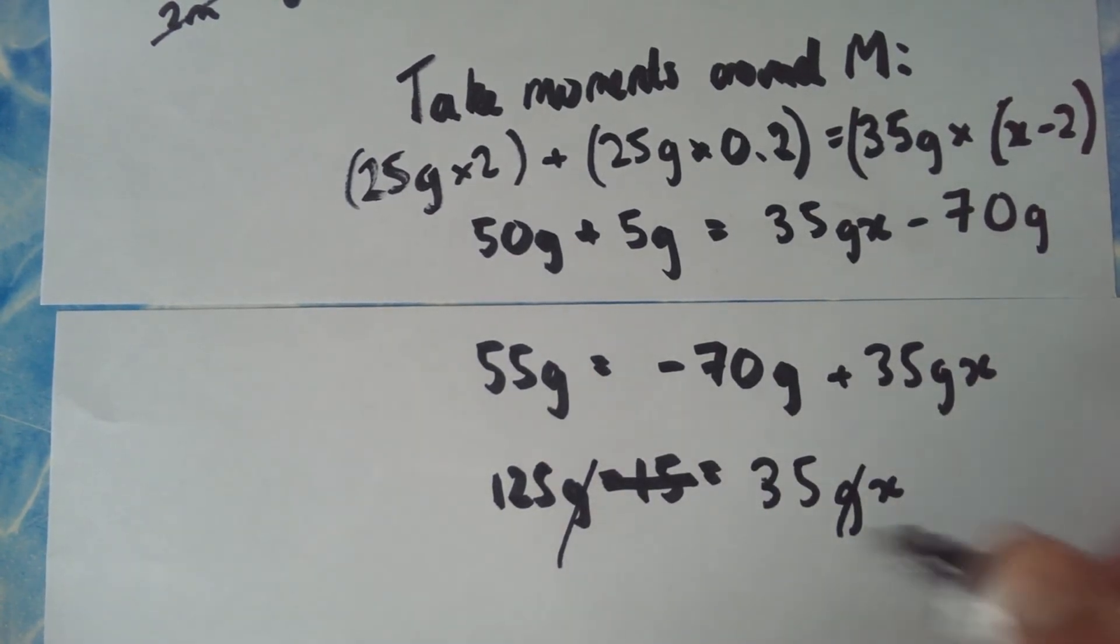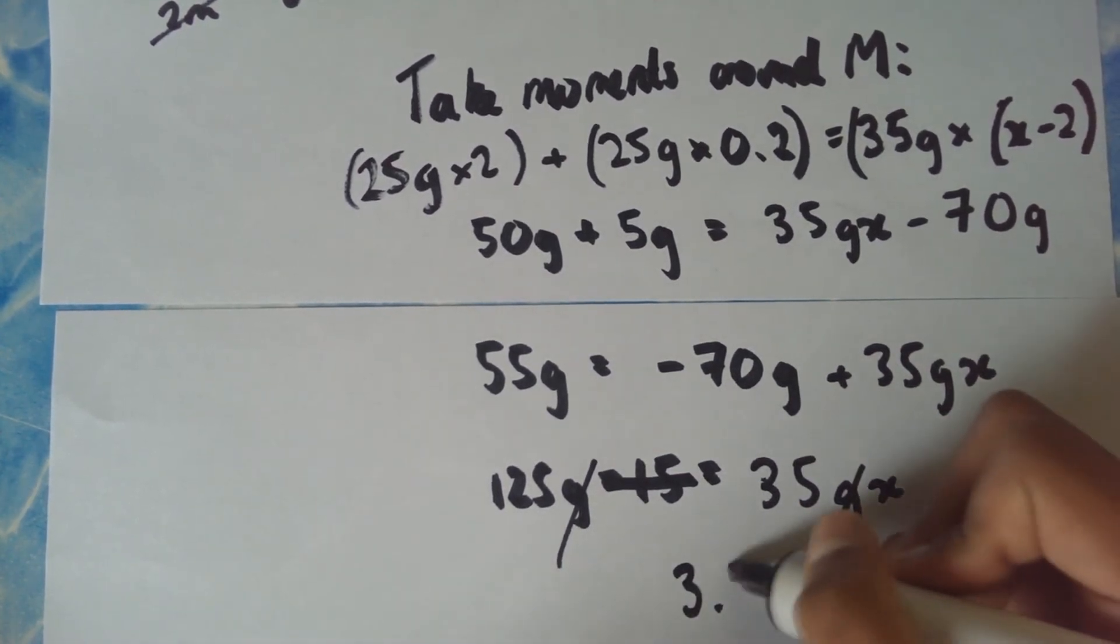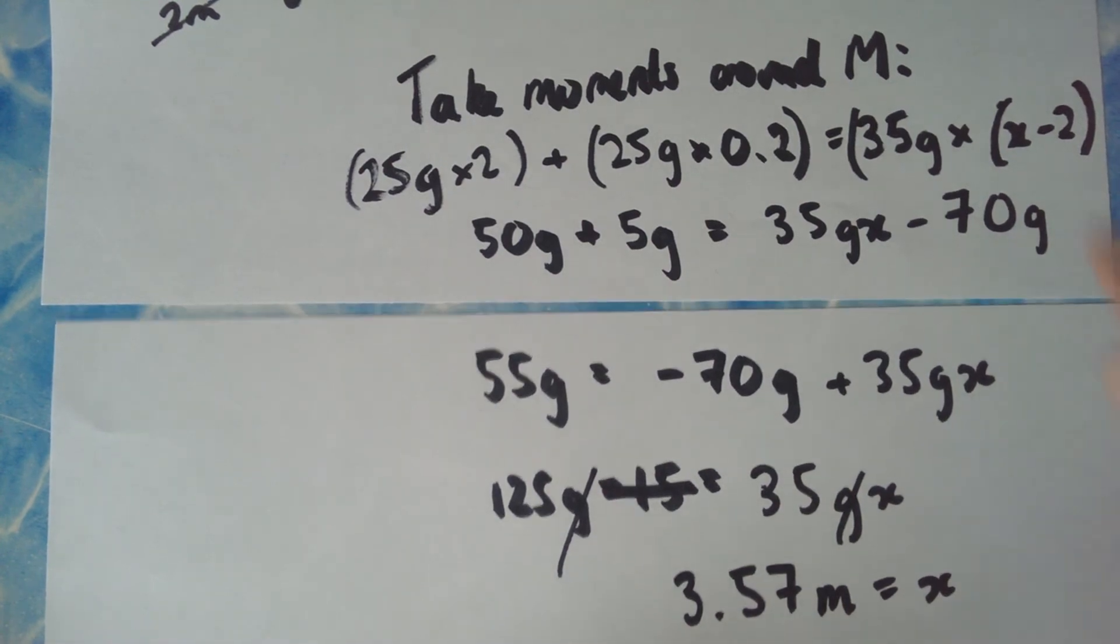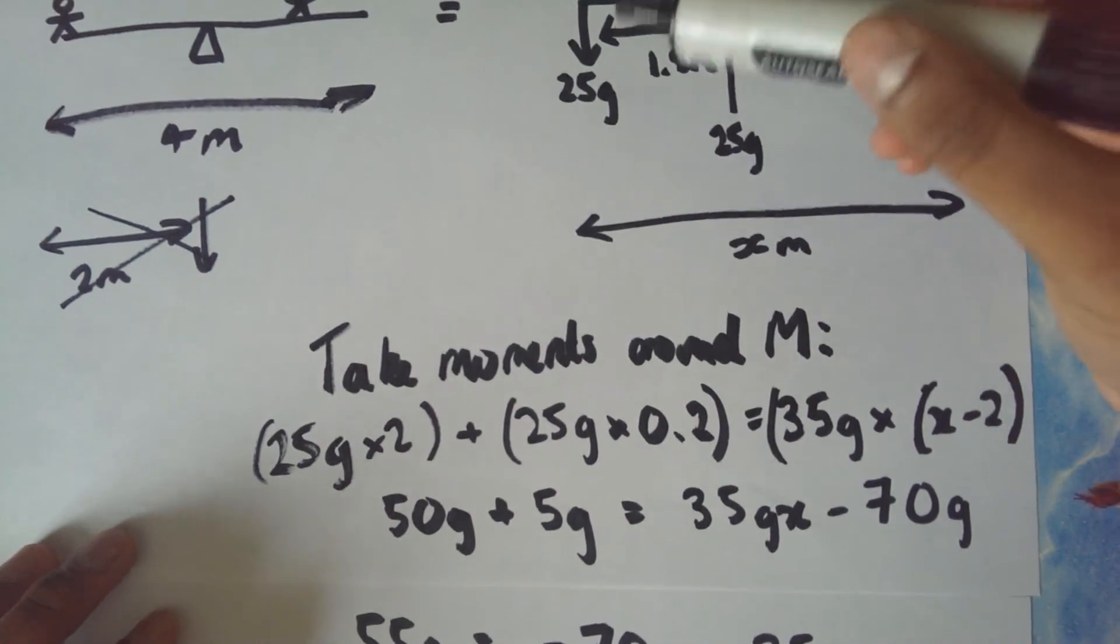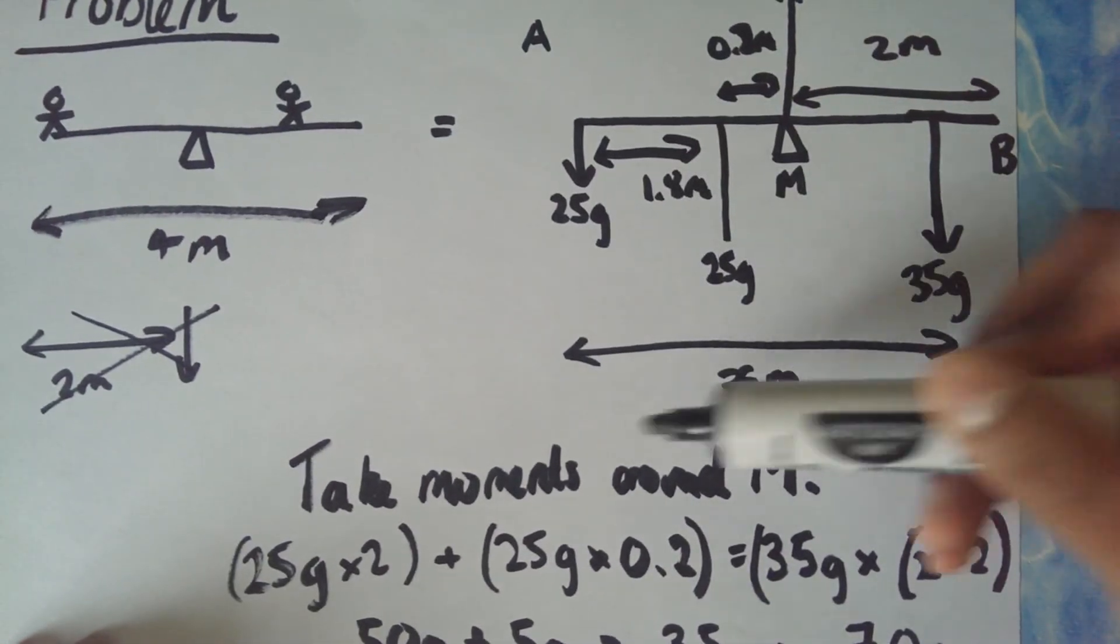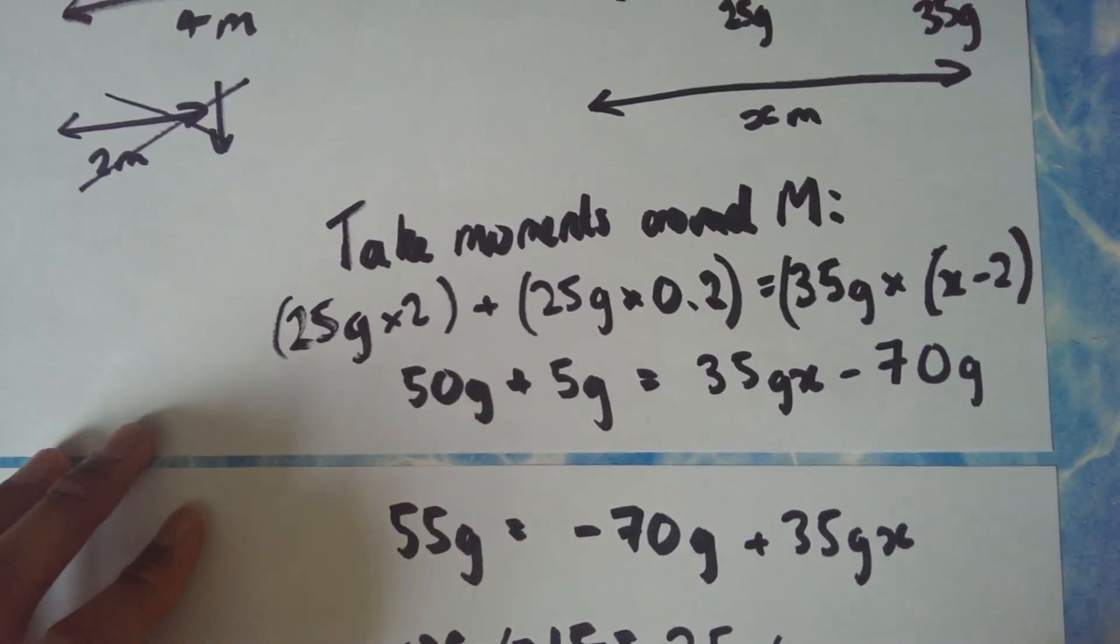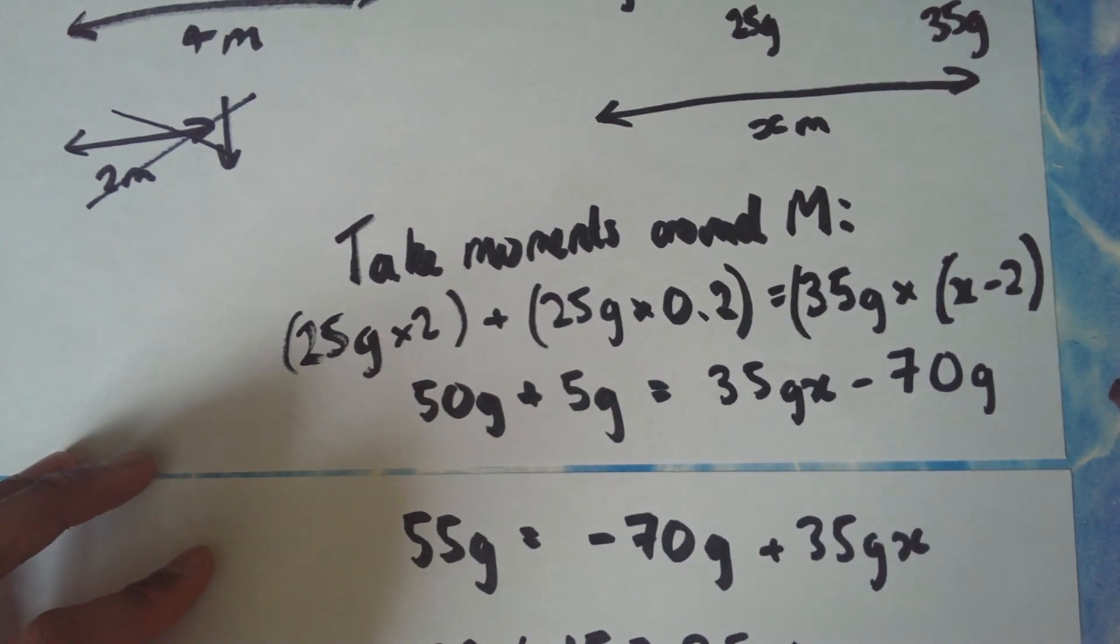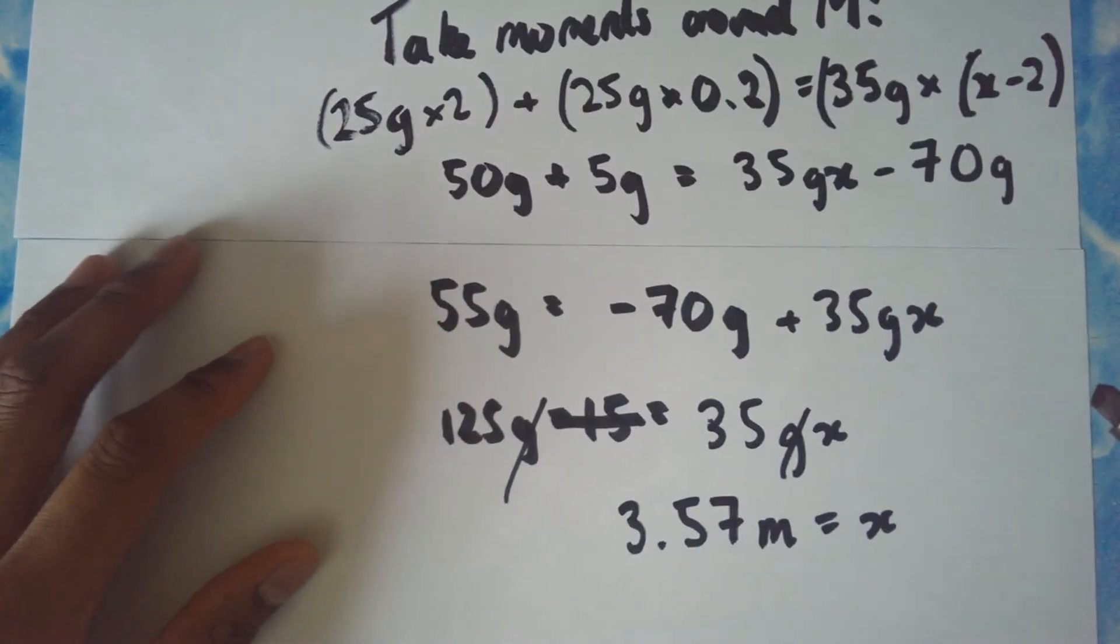3.57 meters equals x. So therefore going back to the original question, we can see that the distance that this person must sit from his friend at point A, which we enabled x, is going to equal 3.57 meters. So if he sits at this point we know that this swing will be in equilibrium and they'll both be at the same level. So hopefully you got that if you worked it out yourself, and hopefully this is a brief explanation of how moments work.